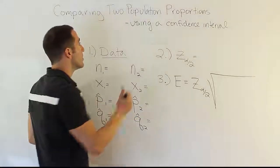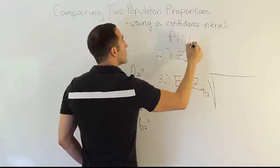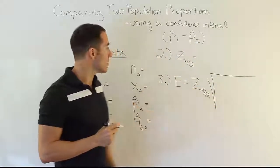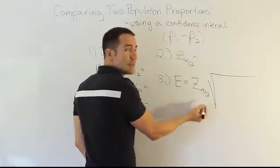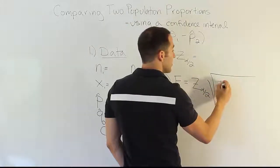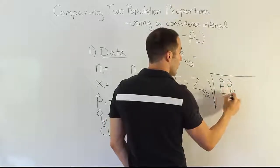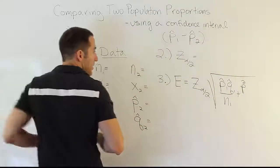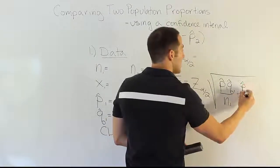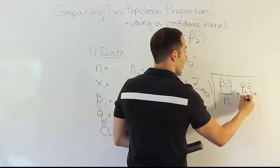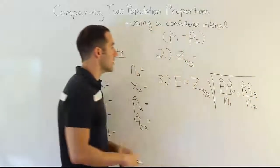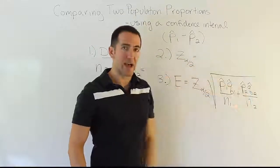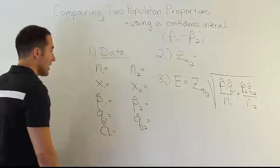So, our point estimator is going to be p-hat 1 minus p-hat 2. That point estimator is going to have the following standard error. So, that's what we have to do is put this standard error here and put it together with the table value to get our margin of error. The standard error is going to be p-hat 1 times q-hat 1 over n1 plus p-hat 2, oops, I wrote a 2 on top of my p instead of p-hat. There we go. So, it'll say p-hat 2 q-hat 2 over n2. Basically, it's the complementary pairs, p-hat and q-hat together divided by their sample sizes added together. That's essentially the standard error.